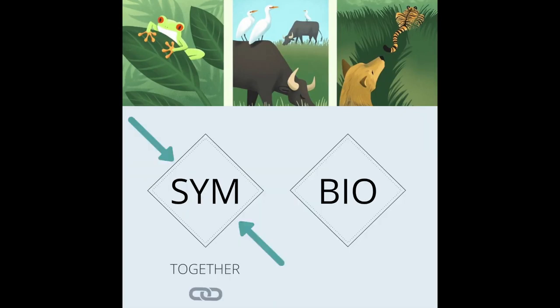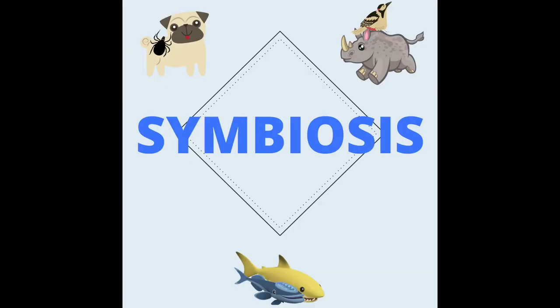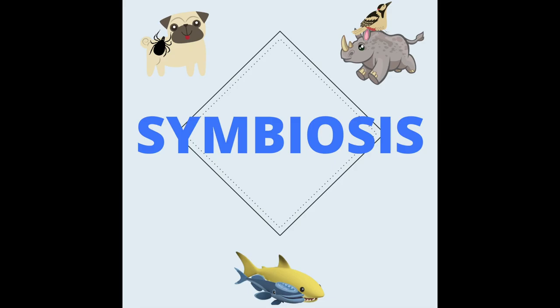These are all examples of symbiotic relationships. Symb means together, and bio means life. So symbiotic relationships describe the relationships between two individuals that live together. This concept is very important because the way organisms interact with each other allows them to acquire better survival skills. The large network of organisms working together can be really helpful in influencing evolution.